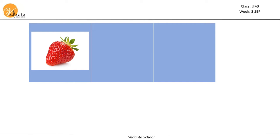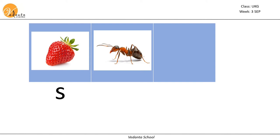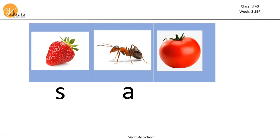Next picture: and. And starts with the a sound. Next one: tomato. Tomato starts with the t sound. Now let's blend these sounds and make a new word.